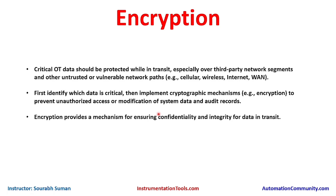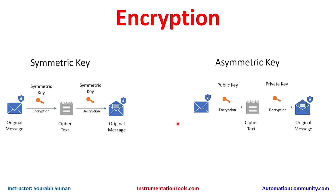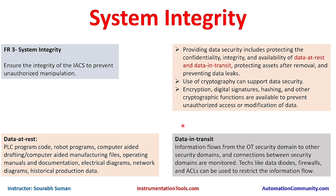Encryption provides a mechanism for ensuring confidentiality and integrity for data both in transit and at rest. Encrypted data in ciphertext cannot reveal its contents, providing confidentiality, and it cannot be changed by unauthorized parties, ensuring integrity. By implementing these solutions, we ensure the integrity of the IACS to prevent unauthorized manipulation and fulfill the foundational requirement as defined in IEC 62443. That concludes the topic of system integrity.